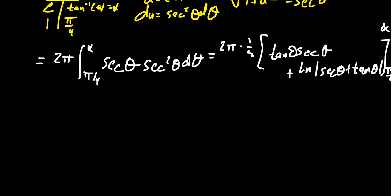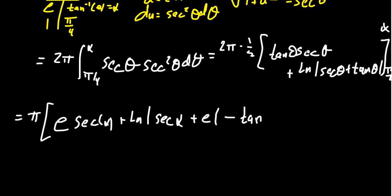You're going to get 2π times 1/2 times tangent θ secant θ, and then add to that the natural log of the absolute value of secant θ plus tangent θ. We're going to go from α to π/4. Notice that 2π times 1/2 is just equal to π. Plugging in α, we're going to get tangent of α. Remember, α is arctangent of e, so tangent of α is going to equal e. We're going to get secant of α. We're going to have to come back for that one. Plus the natural log of the absolute value of secant of α plus e. Then we're going to subtract tangent of π/4, which equals 1, times secant of π/4. And then we're also subtracting the natural log of secant of π/4 plus 1.